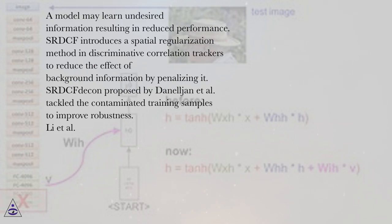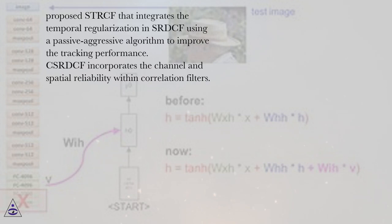SRDCF introduces a spatial regularization method in discriminative correlation trackers to reduce the effect of background information by penalizing it. SRCF de Kahn proposed by Danelljan et al. tackled the contaminated training samples to improve robustness. Lee et al. proposed SDRCF that integrates the temporal regularization in SRDCF using a passive-aggressive algorithm to improve the tracking performance.